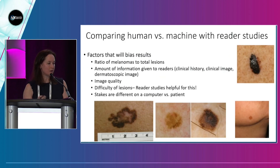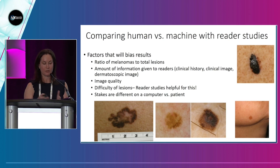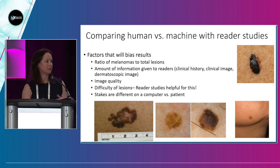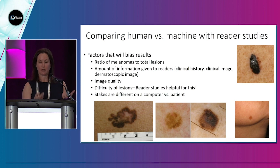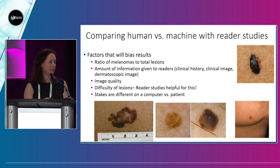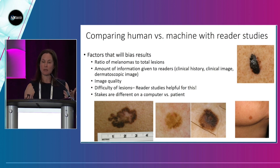A couple of caveats when reading these studies: we're generally comparing human performance in a reader study versus a machine, but there are many factors to consider. The ratio of melanomas to total lesions will change our assessment of whether to biopsy. None of these studies mimic what we see in clinical practice. How much information you have — do you have history, or just a dermatoscopic and clinical image? How good are the images? Are you trying to achieve the best performance on paper, versus the decision you'd make with the actual patient in front of you?